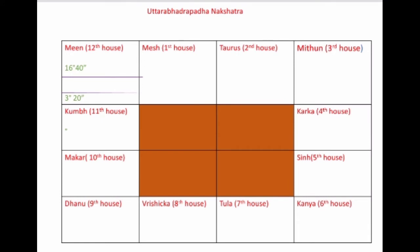This diagram shows us where exactly the Uttar-Bhadrapada Nakshatra lies. It lies in the Meen Rashi, the 12th house in the natural zodiac, between 3 degrees 20 minutes and 16 degrees 40 minutes. The area between the two purple lines inside the Meen Rashi is the Uttar-Bhadrapada Nakshatra, which entirely lies in the zodiac sign of Meen or Pisces.